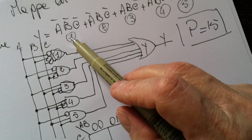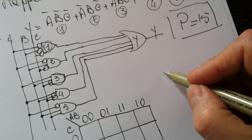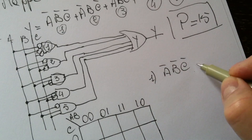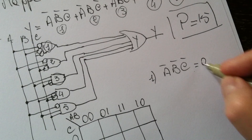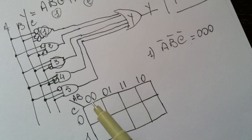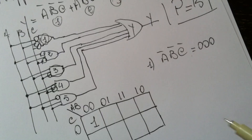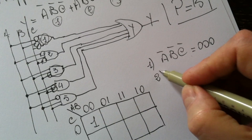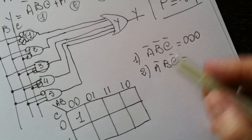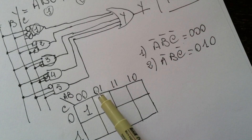Then we write every term of the sum and report it in each slot. The first term is NOT A, NOT B, NOT C, which corresponds to 0, 0, 0 — so we use the first slot (A=0, B=0, C=0) and represent it with a 1. The second term is NOT A, B, NOT C, with values 0, 1, 0, so we occupy the second slot.